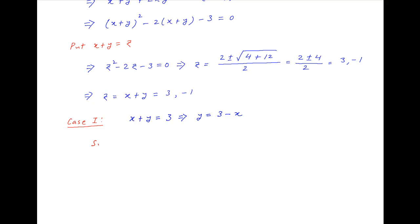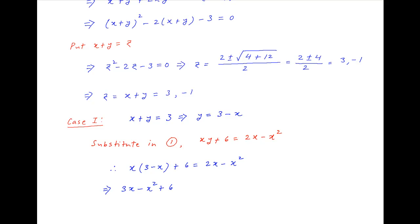Substitute this in equation 1, which is xy plus 6 equals 2x minus x squared. Therefore x times (3 minus x) plus x equals 2x minus x squared, which simplifies to 3x minus x squared plus 6 equals 2x minus x squared. The x squared cancels from both sides, leaving x equals minus 6, and therefore y equals 3 minus (minus 6) equals 9.